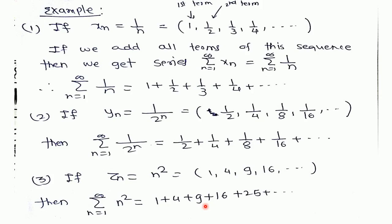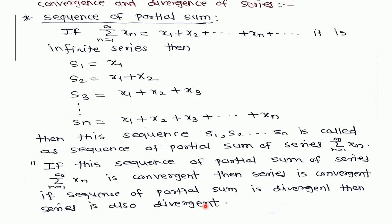Our main aim is to understand convergence and divergence of series, but to do so it is necessary to understand the sequence of partial sums. If our series is x1 plus x2 plus x3 plus x4, and so on, we define: s1 = x1, s2 = x1 + x2, s3 = sum of first three terms, and in general sn = sum of first n terms. This sequence s1, s2, s3, s4, ... is called the sequence of partial sums of the series.